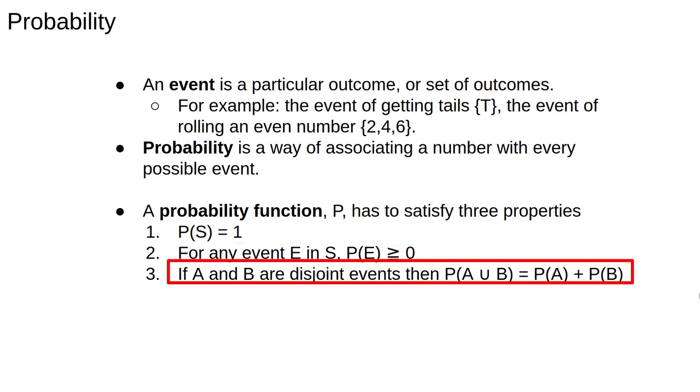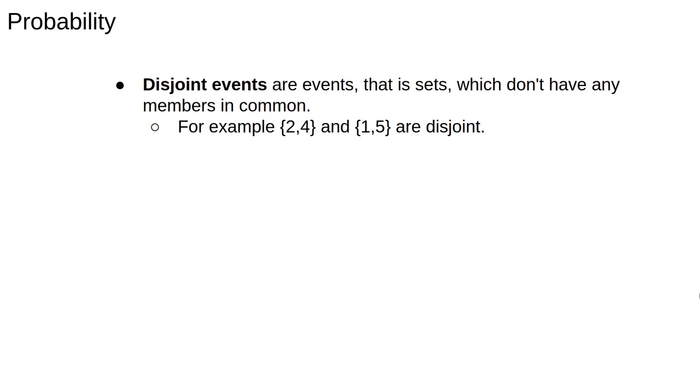The third rule is slightly more complicated. First, we need to define what a disjoint event is. Disjoint events are events, that is sets, which don't have any members in common. So for example, the sets 2, 4 and 1, 5 are both disjoint from each other. Next, we need a bit of set notation. The U is read as union, or sometimes as or.